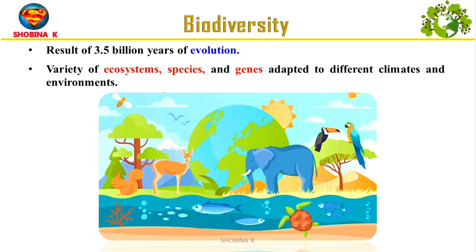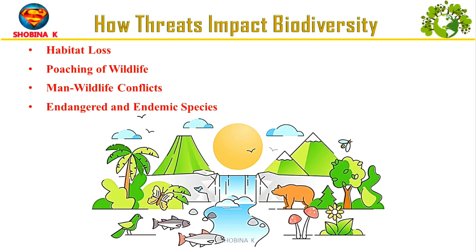Biodiversity is the result of 3.5 billion years of evolution. It encompasses a vast variety of ecosystems, species and genes, all adapted to different climates and environments. Biodiversity is vital for our planet's health and stability, but it's under threat from various human activities.